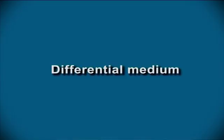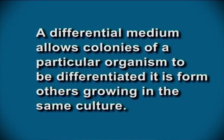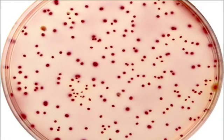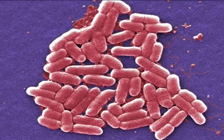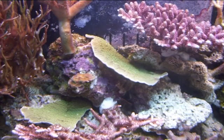A differential medium allows colonies of a particular organism to be differentiated from others growing in the same culture. These media provide environments in which different bacteria can be distinguished from one another. For instance, violet red bile agar is used to distinguish coliform bacteria such as Escherichia coli from non-coliform organisms. The coliform bacteria appear as bright pink colonies in this media while non-coliforms appear light pink or clear.